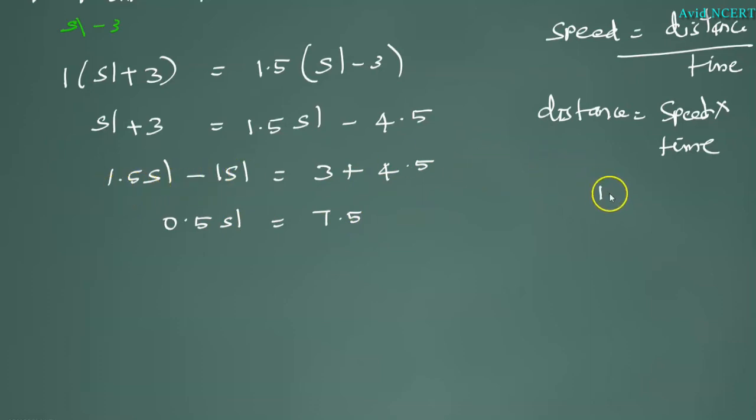I can even show how this is done. 1.5 minus 1 which is 1.0, 5, 1 minus 1 is 0 point, 0.5 SL and here it is 4.5 plus 3.0, it is 5, 4 plus 3 is 7 point, 7.5.